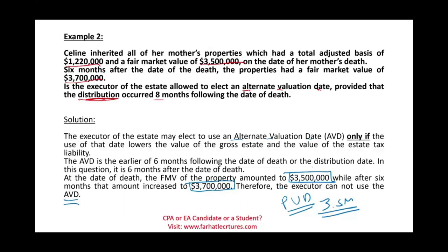Why would the government prefer not to tax on the $3.7 million? To be subject to estate tax, the gross estate value must be very high. At these levels, $3.7 million may not even be taxed at the estate level. So the government prefers that the asset passes to Celine, the beneficiary, and that Celine eventually pays taxes when she disposes of the property. Go to Farhat Lectures, whether you are a CPA or an accounting student. Work multiple choice questions, review additional resources. Learning the basis of assets — whether gifted or inherited property — is important. Study hard, good luck, and stay safe.